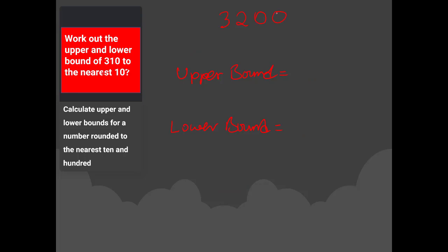Now let's look at an example where we round to the nearest hundred. We have 3,200. Divide 100 by two, giving 50. For the upper bound, add 50 to 3,200, giving 3,250. For the lower bound, take away 50 from 3,200, giving 3,150. Written as a range: 3,150 ≤ X < 3,250, with the lower bound on the left and the upper bound on the right.